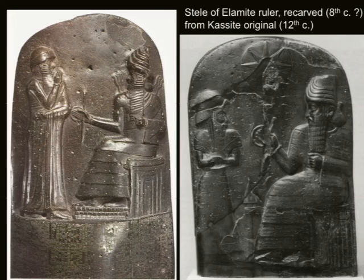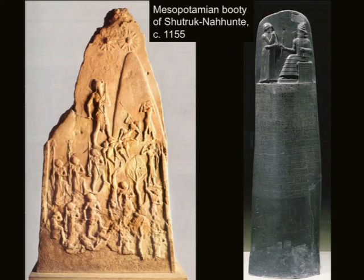We can see that these objects are actually very important for a number of reasons. They have a tremendous amount of influence and a second sort of life in Susa. We already talked about how the Stele of Naram-Sin was rededicated — there's an Elamite inscription on it, right here. So it's rededicated.